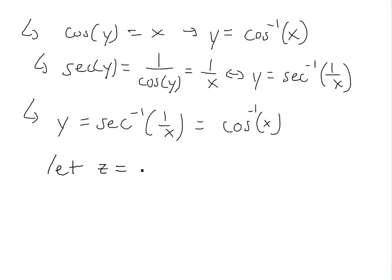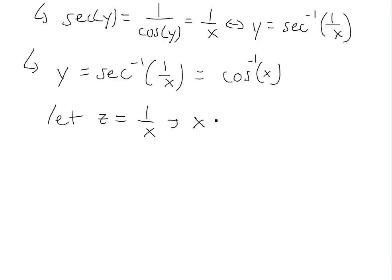Let's let z equals to 1 over x. Then if you do that, then switch this around, x would equal to 1 over z. So bring x to this side, divide it by z, so 1 over z. So when you plug this in, we get y is equal to inverse secant of z. That's for the 1 over x. This equals to inverse cosine of x is 1 over z.